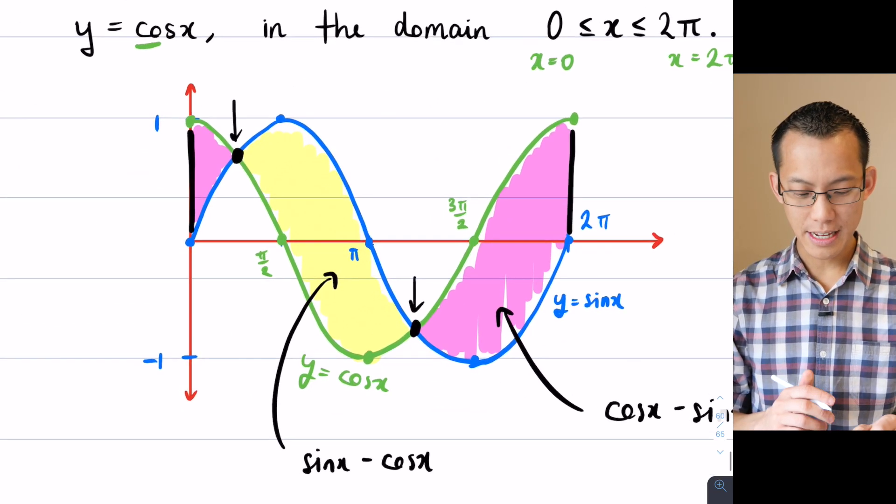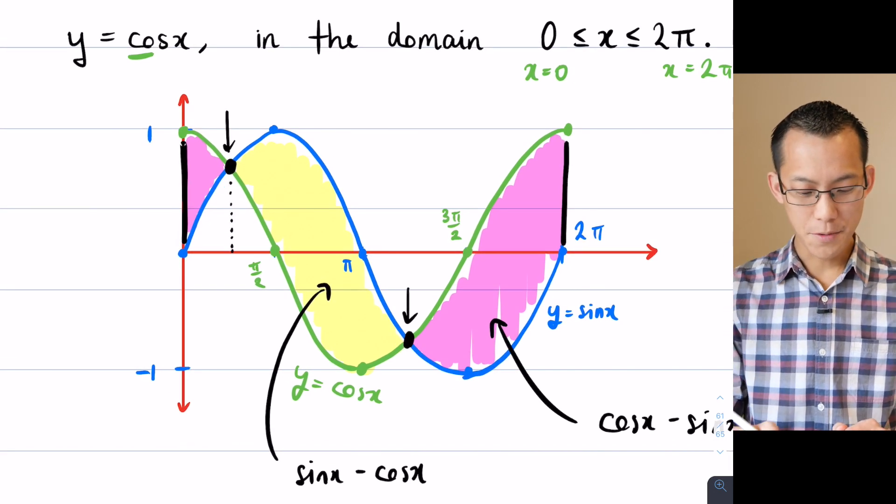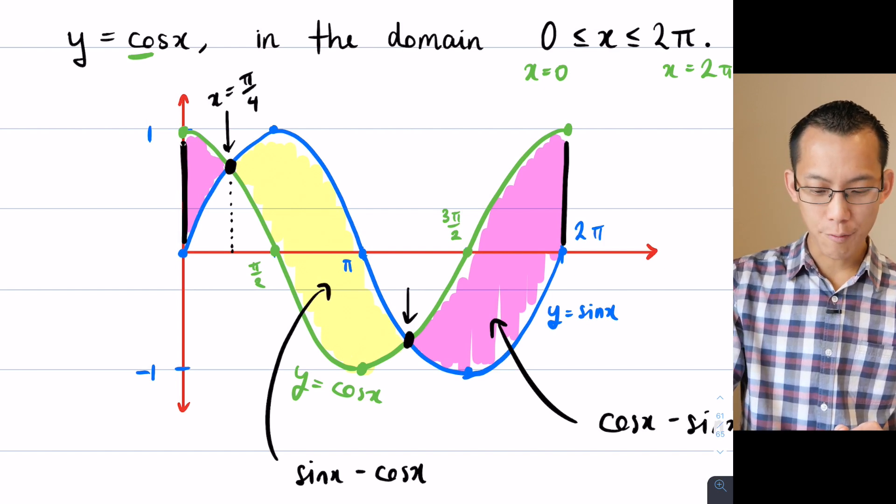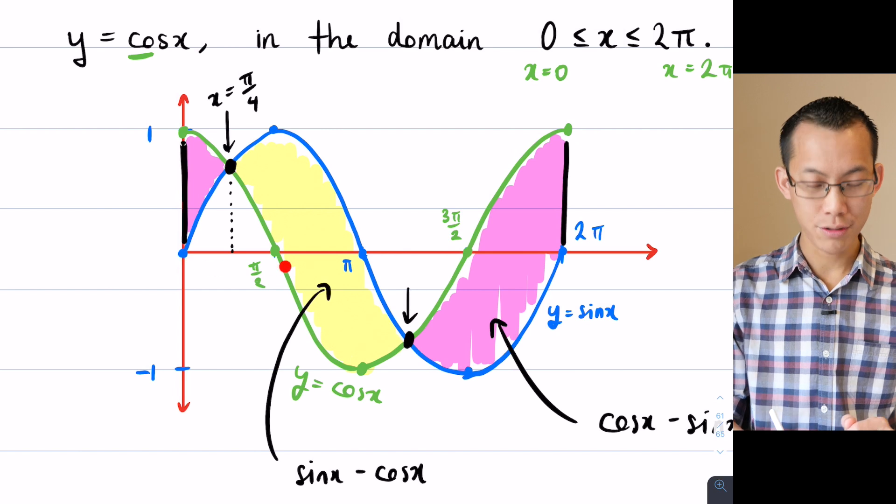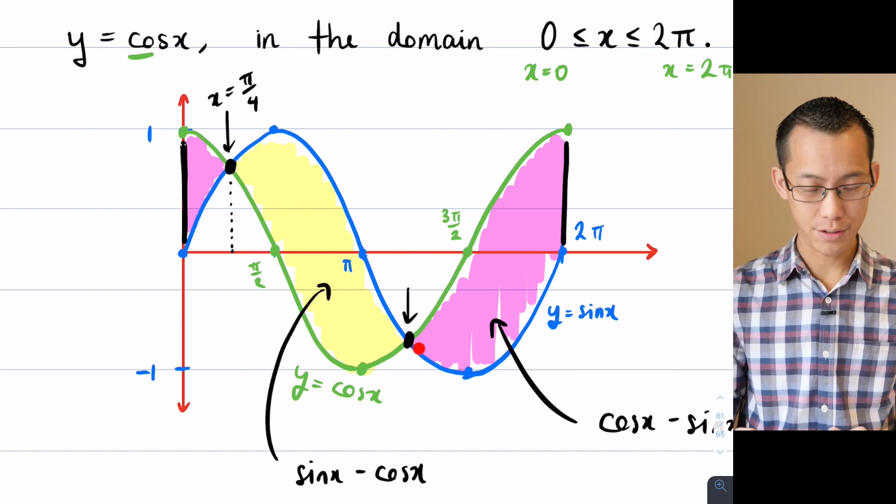So π on 4, there's the first solution, but I know I need another. Now what's handy is I can see that π on 4 does match. In fact, my freehand sketch was good enough that you can see π on 4 is smack bang halfway between 0 and π on 2. Where is this other one?